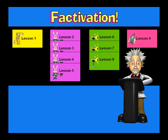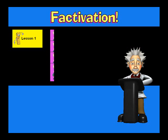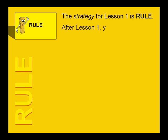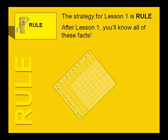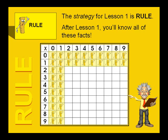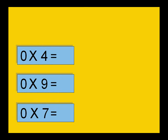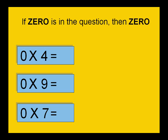Now let's take a closer look at the strategies. The rule group contains only lesson one. The strategy for lesson one is rule. After lesson one, you'll know all of these facts. Here's a rule from lesson one: if zero is in the question, then zero is the answer.